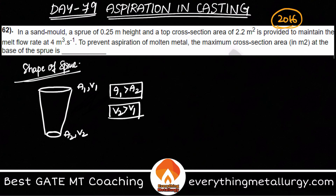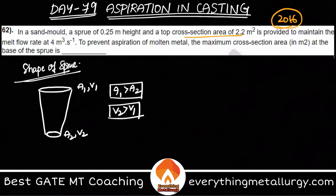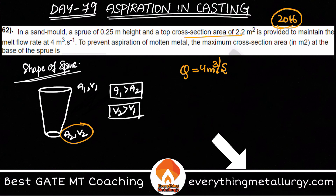Now let's look at this question asked from GATE 2016 — a two-mark question. In a sand mold, a sprue of 0.25 meter height is provided to maintain the melt flow rate at 4 meter cube per second, so Q equals 4 m³/s. To prevent aspiration, the maximum cross-section area at the base — they are asking us to calculate A2. We know the metal flow rate Q equals A1·V1 equals A2·V2.